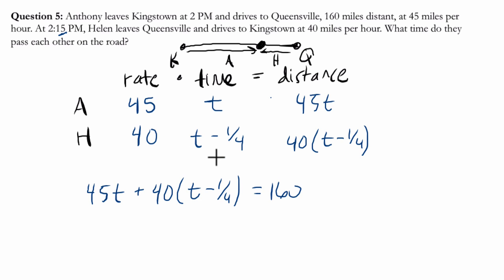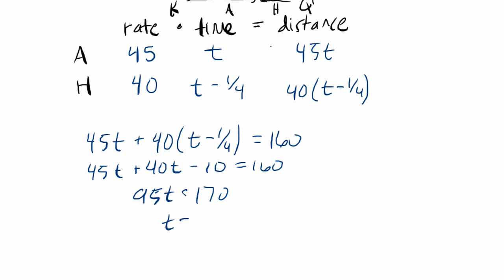So now we just solve for T, right? So this problem, we get 45T. Distribute the 40. It's 40T minus a fourth of 40, which is 10, equals 160. That's 95T equals 170, and T is 2.